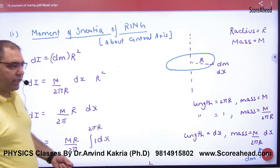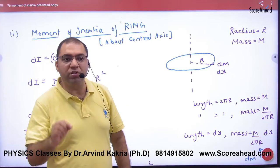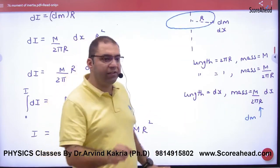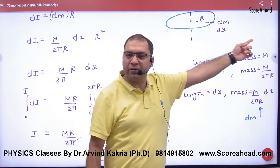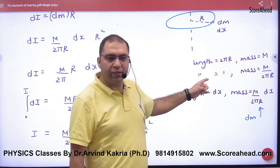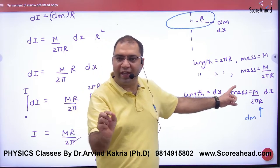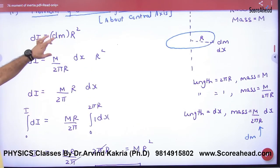This dm corresponds to length dx. How do we find dm? Mass is distributed lengthwise. If the total ring length is 2πR with mass M, then for length 1, mass is M/(2πR), and for length dx, dm = (M/2πR) × dx. Put this dm here, and r cancels.